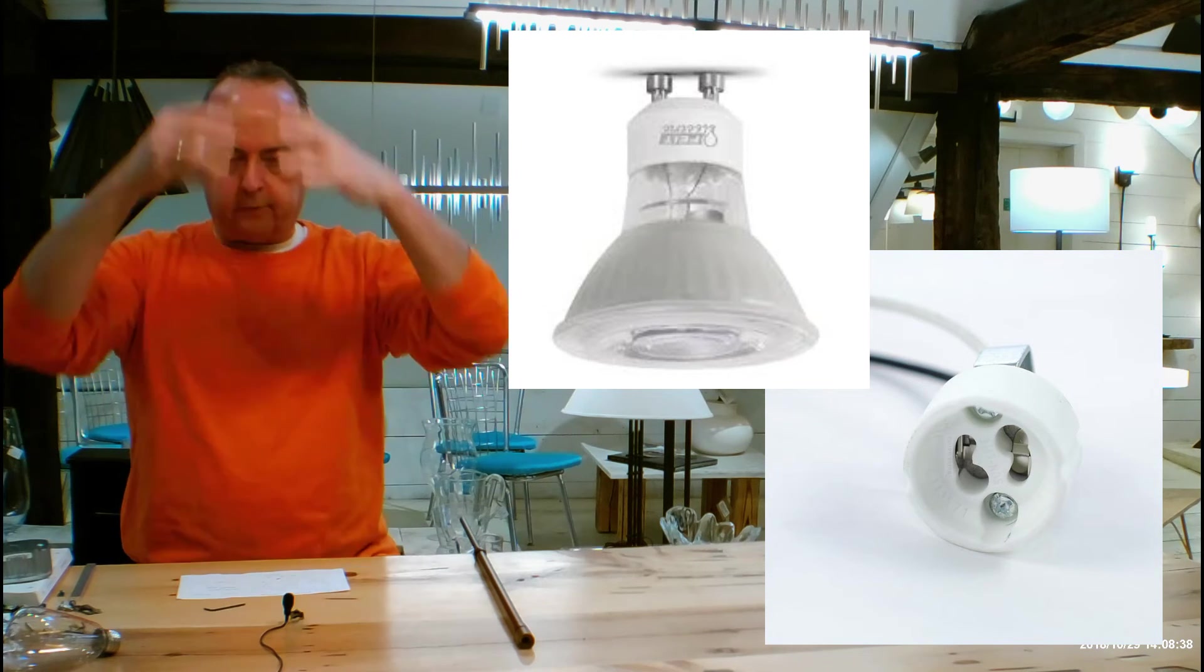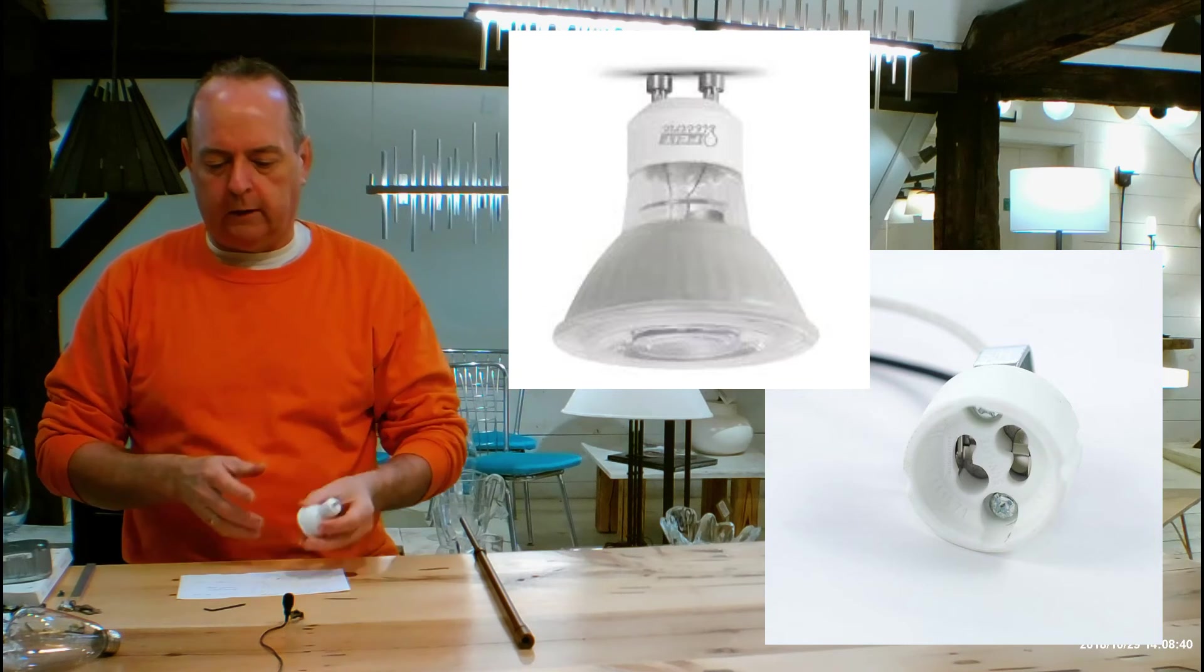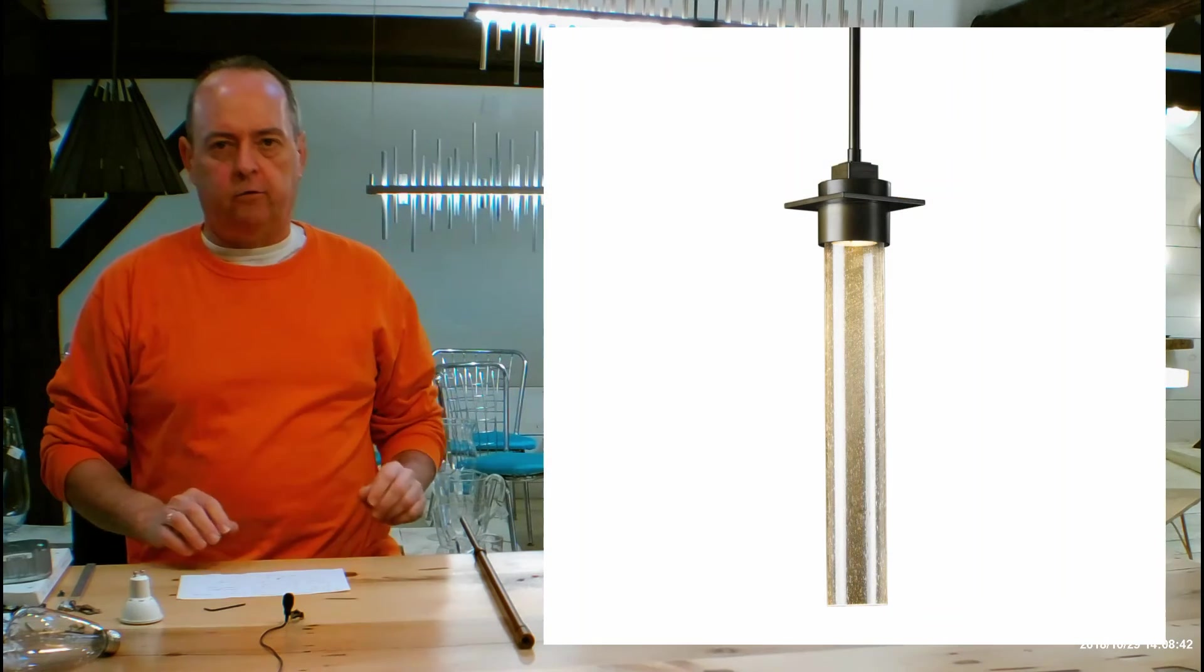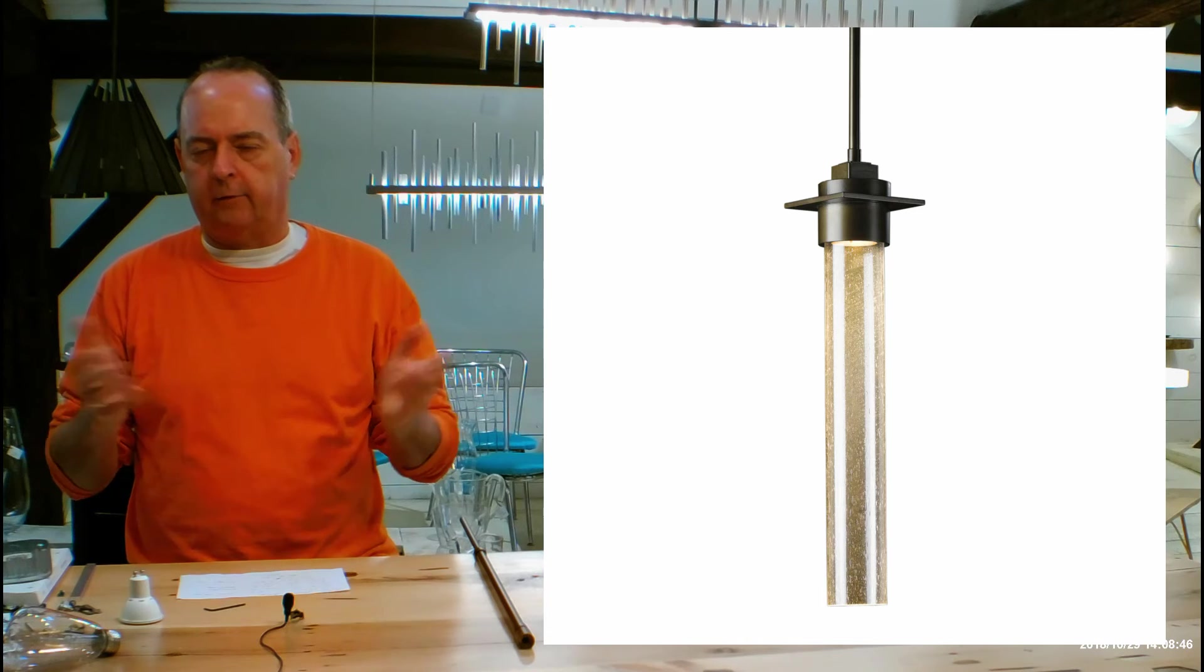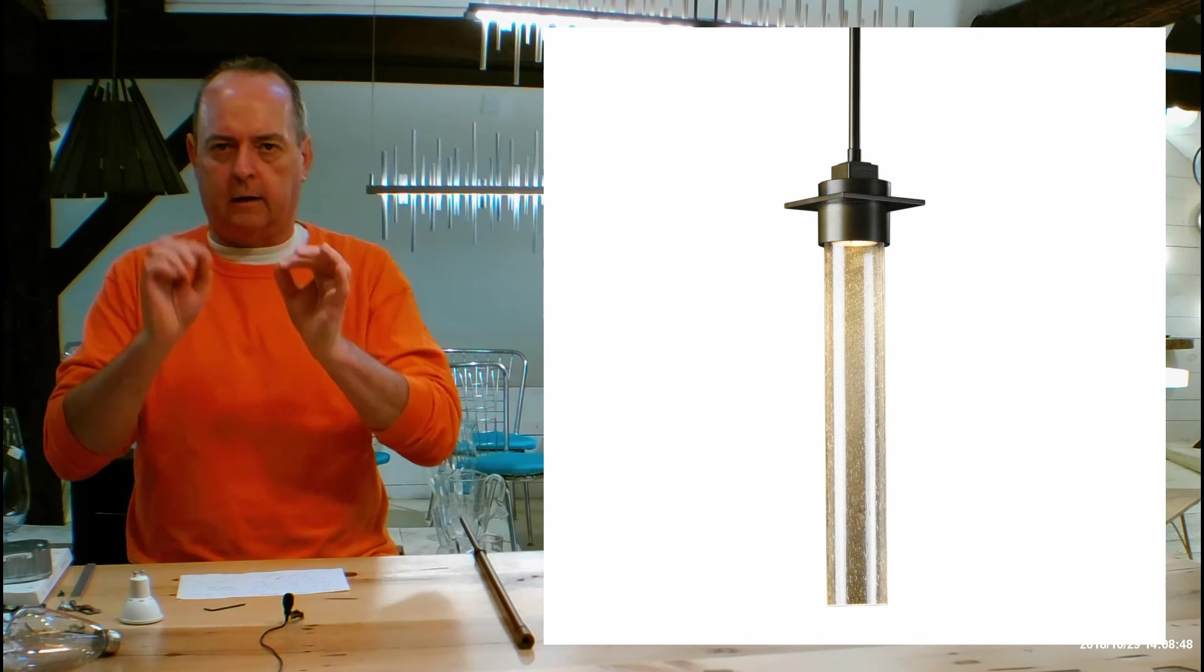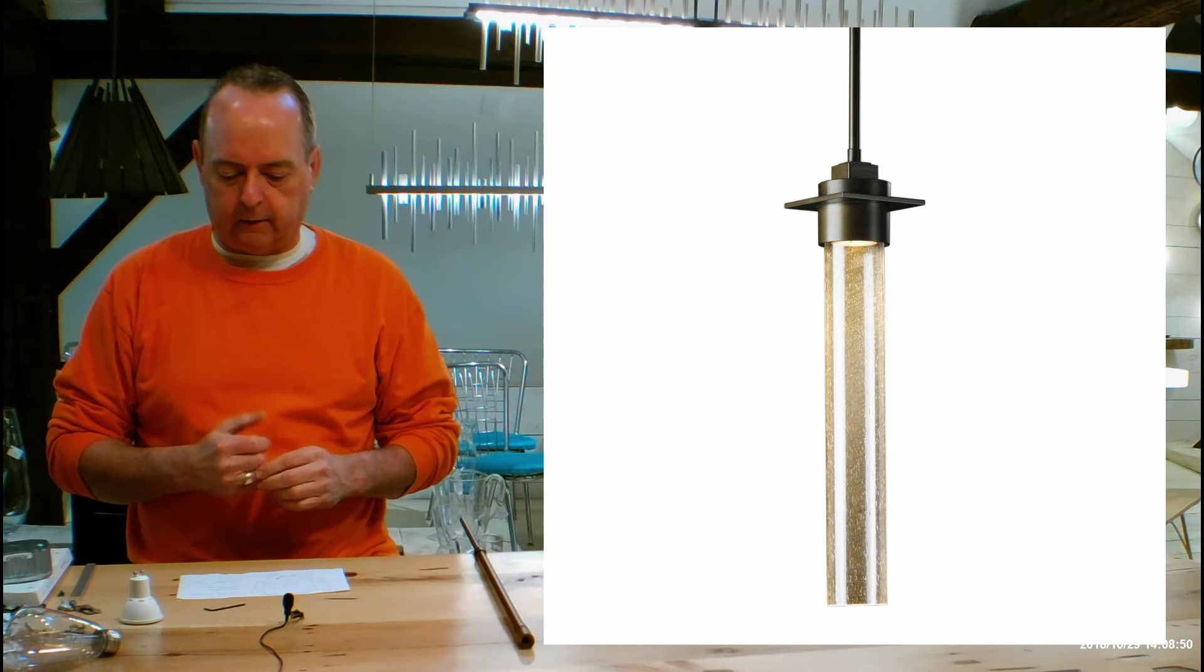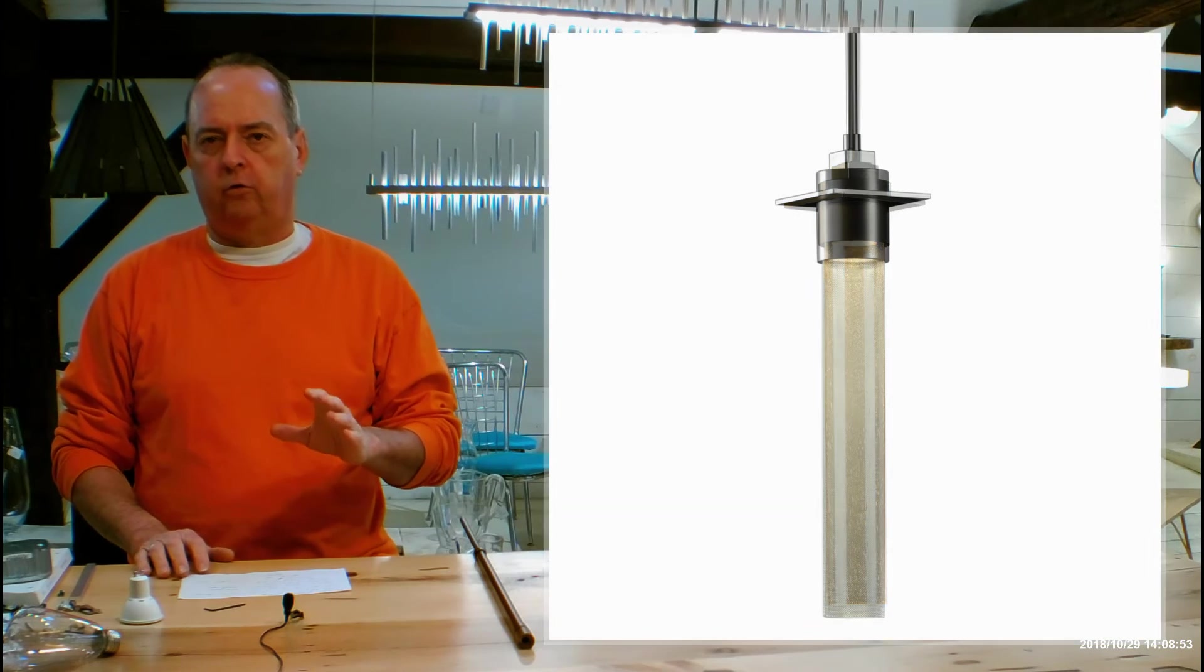So, this light is going to be shining down through either a piece of glass or a mesh screen tube. And almost universally people buy the glass because they happen to love this glass with little air bubbles in it. It's called Seeded Clear. The other option is going to be this mesh tube.